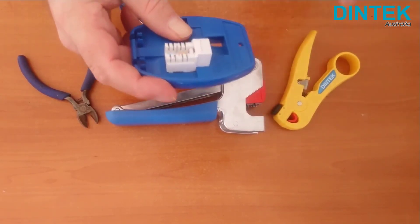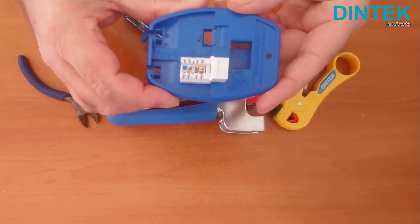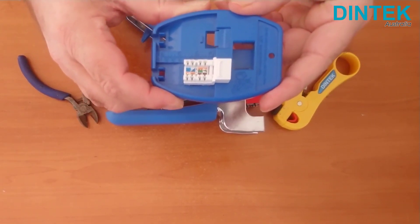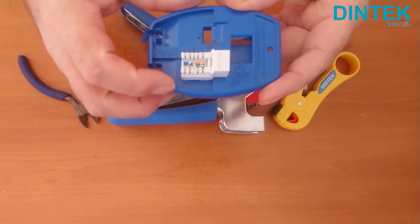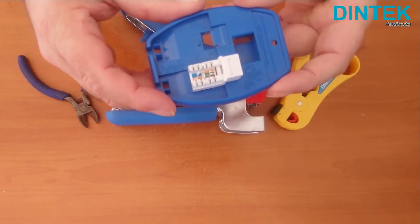Dintek easy jacks have the colour code displayed inside the jack. Today we're using the T568A standard, which is the standard we use in Australia. That's displayed in the centre two columns inside the jack.